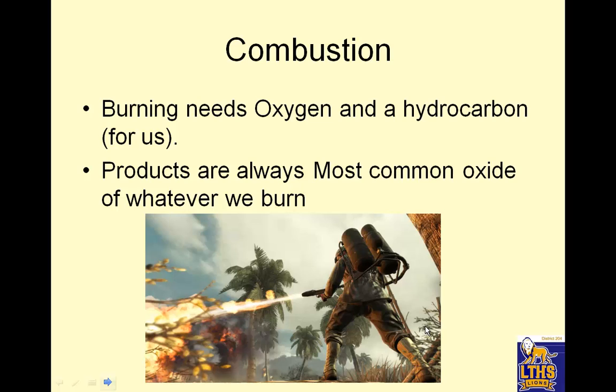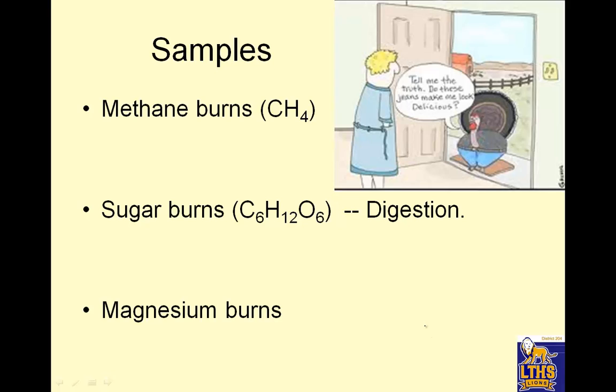Combustion, burning. Burning needs oxygen and a hydrocarbon for us. Now it doesn't need to be hydrocarbon, it can be anything else. So if you react something with oxygen and it says burning, products are always the most common oxide of whatever we burn. Most common oxides. So methane burns. And so I have CH4. If it burns, that means I have plus O2. The most common oxide of carbon is carbon dioxide. I've heard of that before. The most common oxide of hydrogen is water. I've heard of that before.